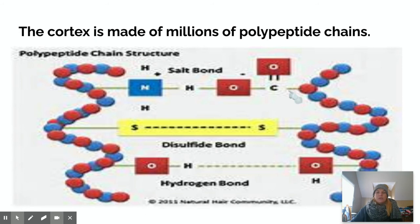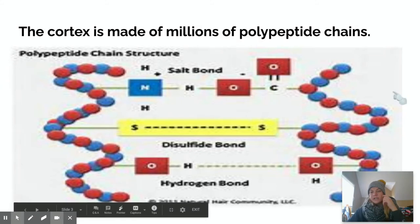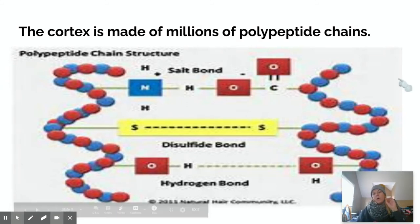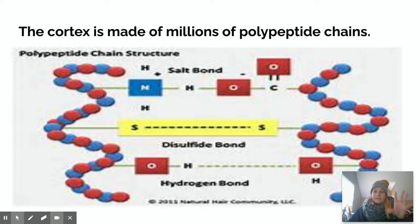This is a little blurry, but we can kind of see the cortex is made up of millions and millions of polypeptide chains. So even though there are just two polypeptide chains here, you need to think about when we're talking about one single strand of hair, there's millions and millions of these peptide bonds inside. And within these polypeptide chains, we can have three different types of interactions.